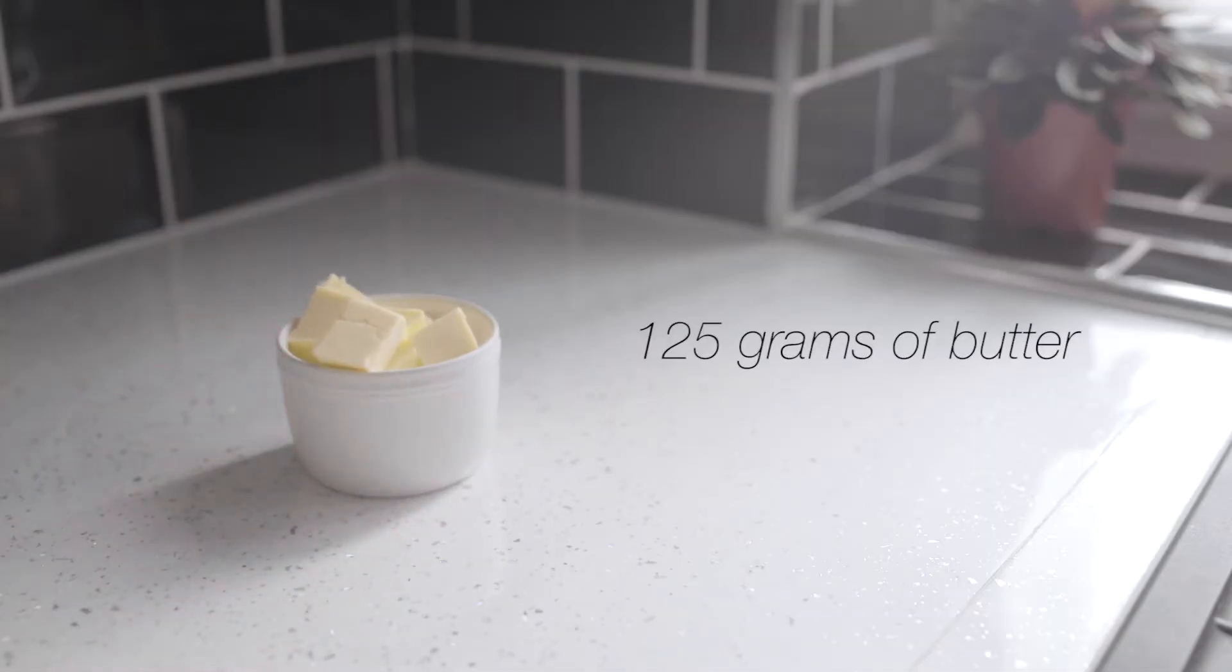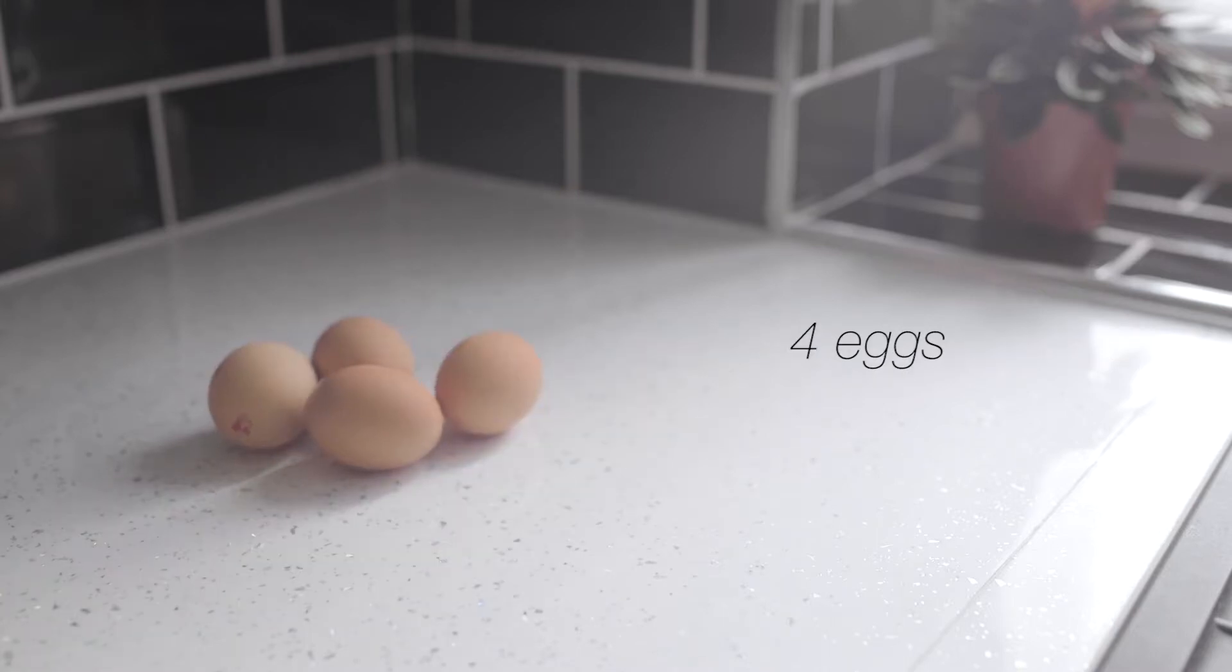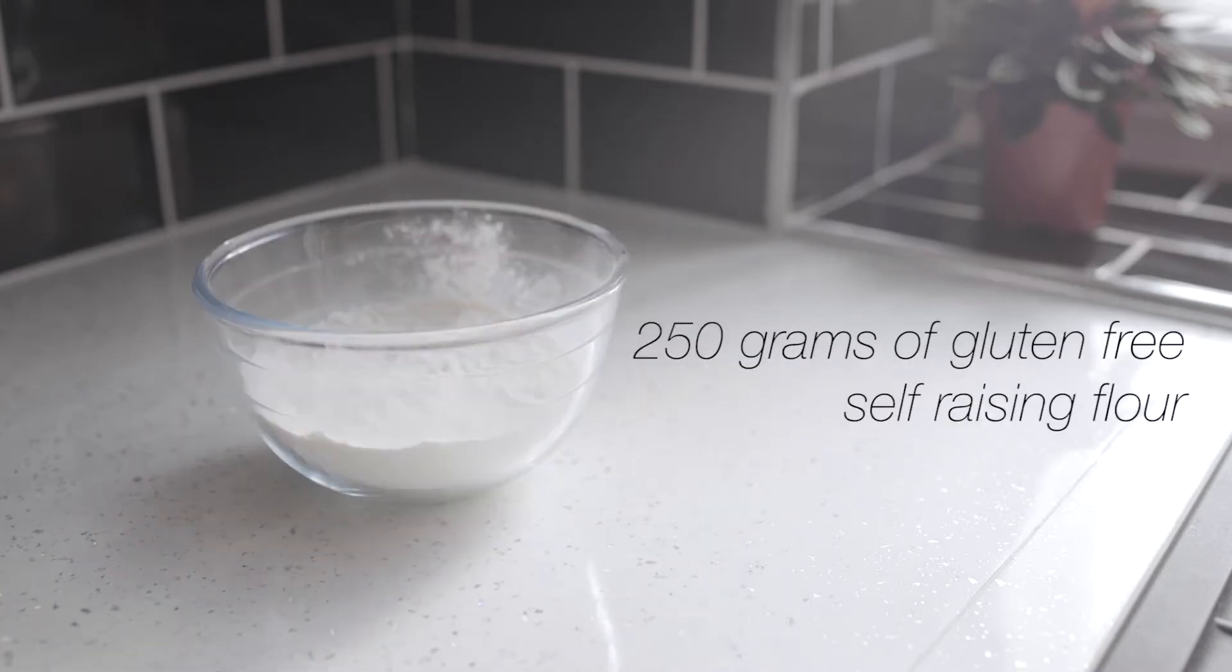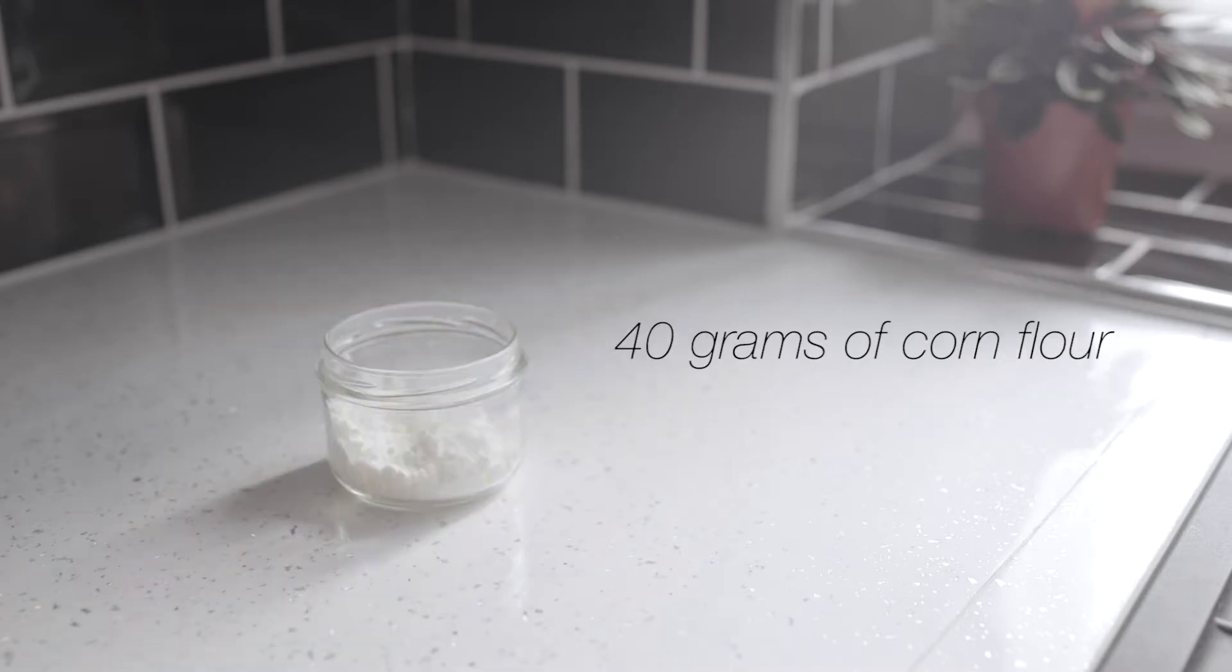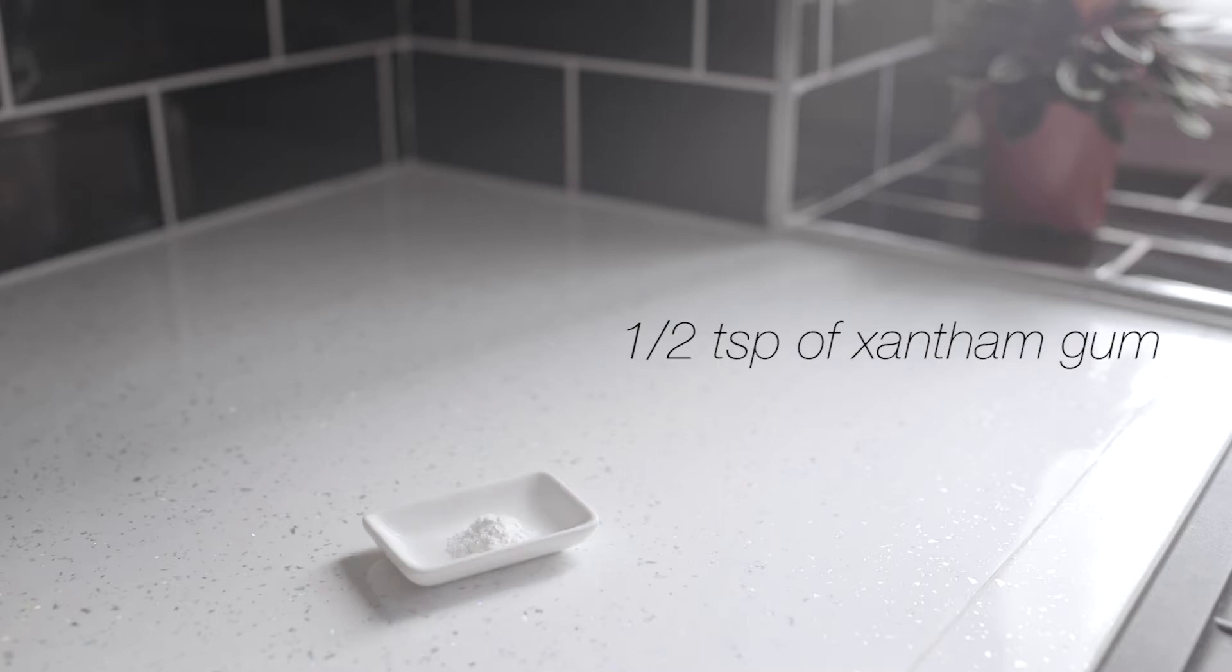To make the sponge you will need 125 grams of butter, 150 grams of caster sugar, 4 eggs, 250 grams of gluten-free self-raising flour, 40 grams of corn flour, 1 teaspoon of baking powder, half a teaspoon of xanthan gum and half a cup of milk.